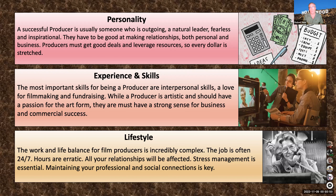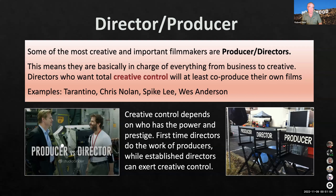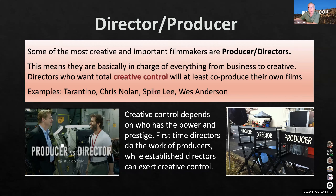The work-life balance for film producers is incredibly complex. The job is often 24/7 and hours are erratic, so relationships will be affected and stress management is key. Director-producers are people who do both jobs — involved in all business and creative decisions as well as directing the film. Tarantino, Christopher Nolan, Spike Lee, Wes Anderson — a lot of the biggest auteur directors are also producer-directors. They hire people to do the nitty-gritty work but retain creative control.